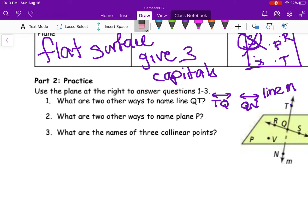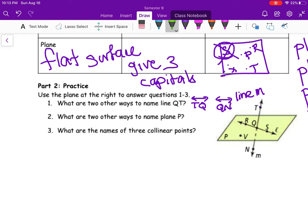For the next part, for number two, it says what are two other ways to name plane P? So we know this is plane P because of that capital letter down in the corner. And to name a plane, what you're going to do is just say plane and then you want to pick three other capital letters that fall on that line.